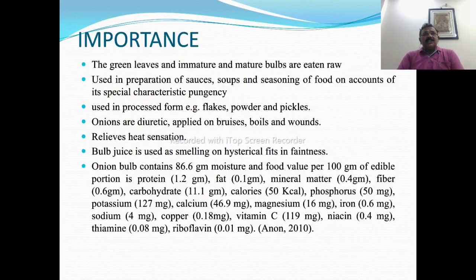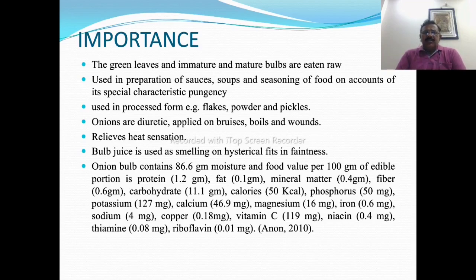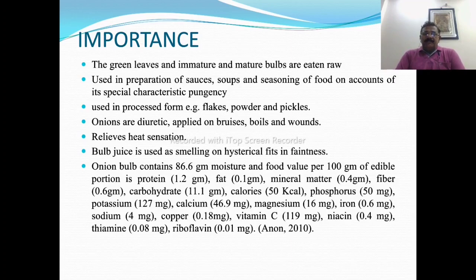The major importance of onion to human beings: the green leaves and immature and mature bulbs are eaten raw and used in preparation of sauce, soup, and seasoning of foods on account of its special characteristic of pungency. Used in processed form such as flake powder and pickles, as a diuretic, applied on bruises, boils and wounds, and relieves heat sensation. Bulb juice is used as smelling salt in hysterical fits and faintness.